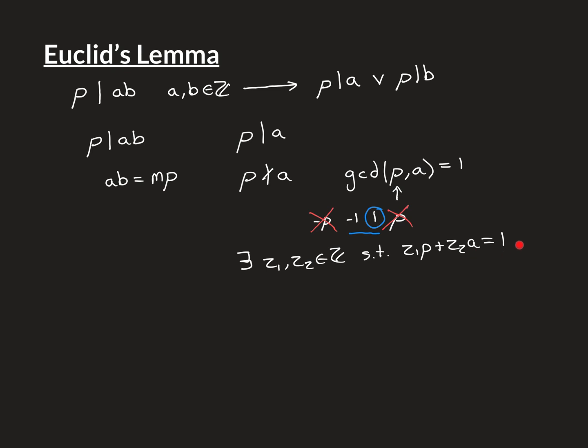I'm going to do that by adapting this equation here. So multiplying both sides by B gives me Z1 times P times B plus Z2 times A times B is equal to B.